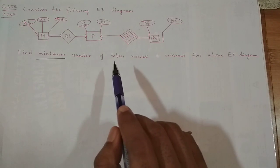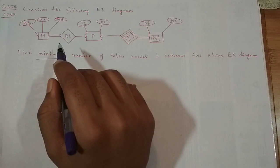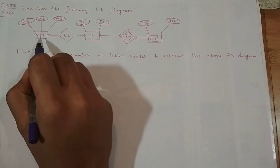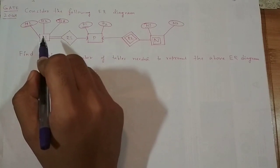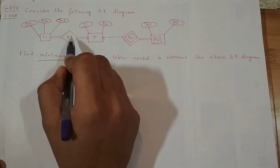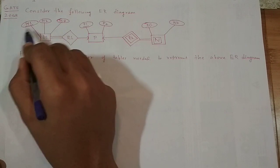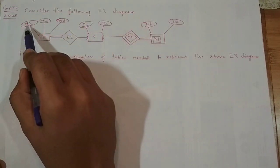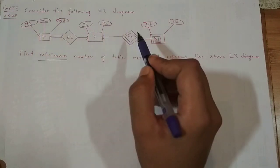In order to solve this question, we must be thorough with the symbols used in an ER diagram. A rectangle represents an entity set. A diamond, as you can see here, represents a relationship. These ellipses represent attributes. If an attribute is underlined, then it is known as a key attribute.